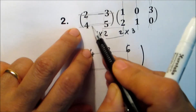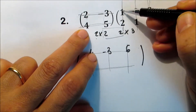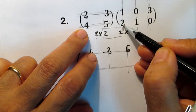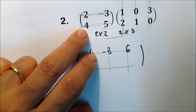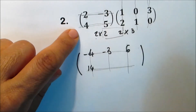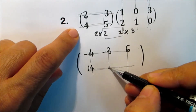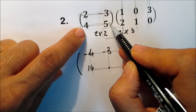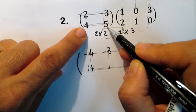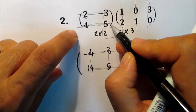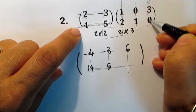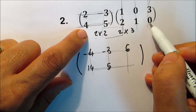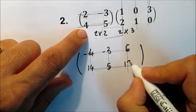Now for the second row in the new matrix, go to the second row in the first matrix and start with the first column of the second matrix. Four times one is four, plus five times two is ten, so four plus ten is fourteen. The second element: four times zero is zero, and five times one is five, so it's five. The third element: four times three is twelve, and five times zero is zero, so it's twelve.